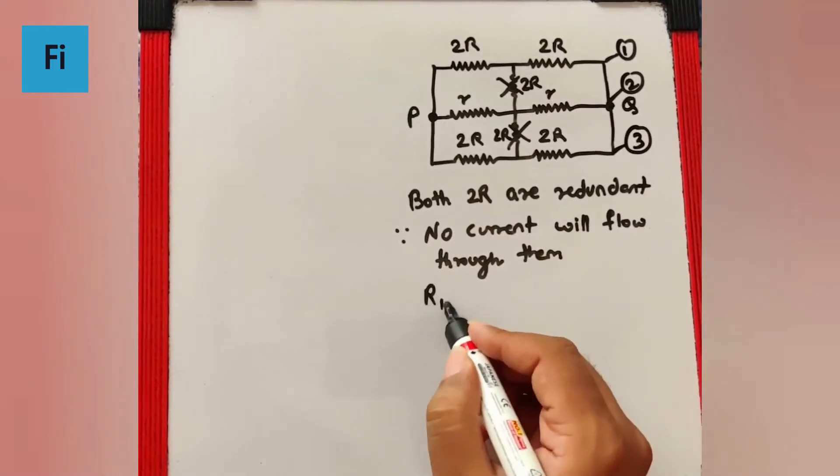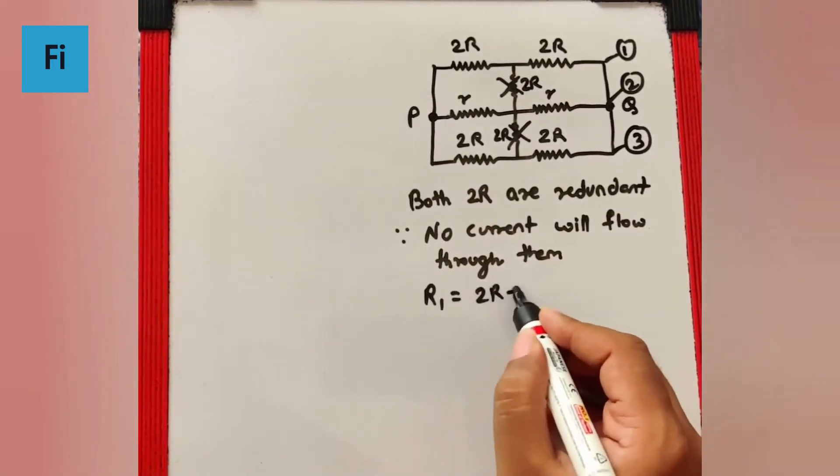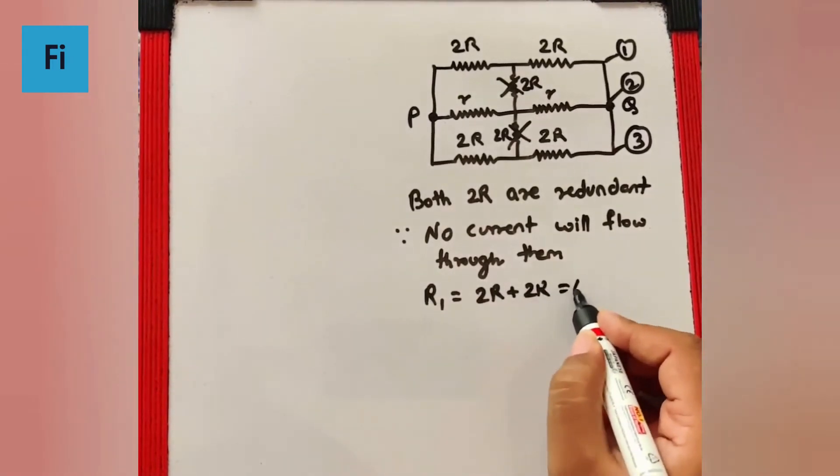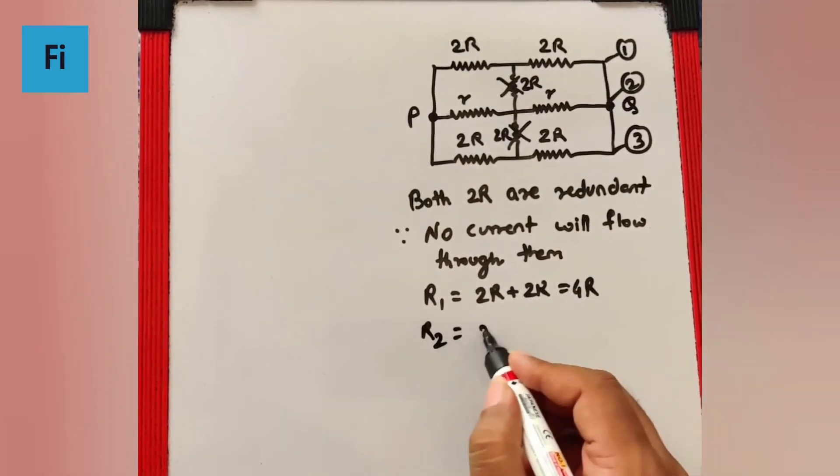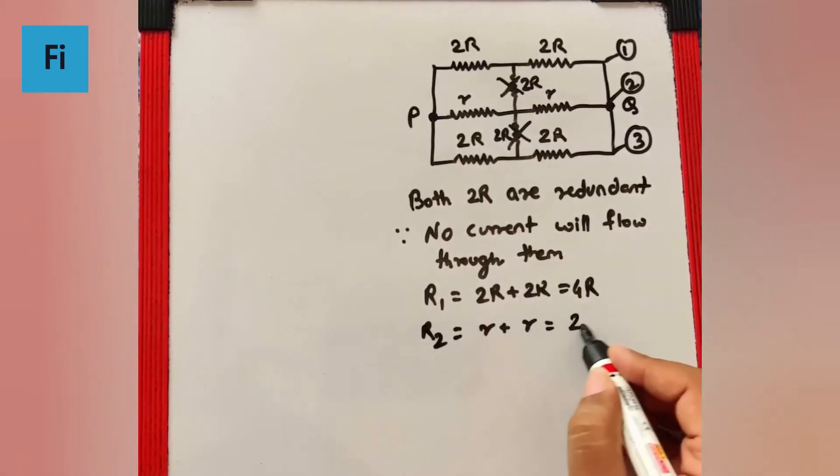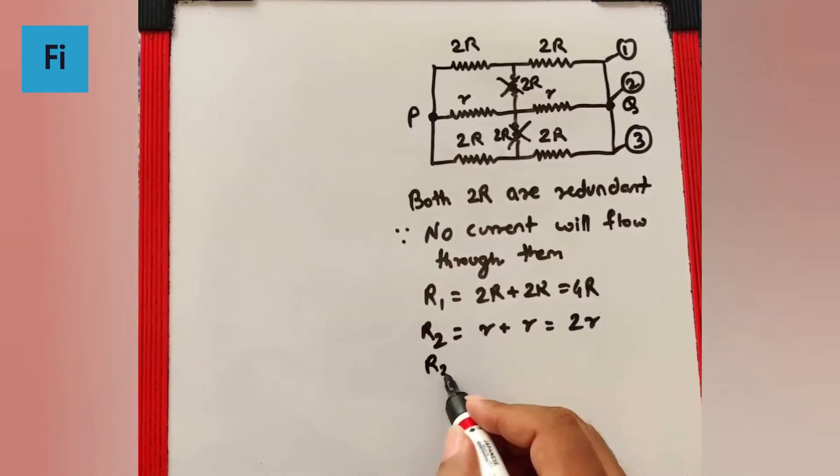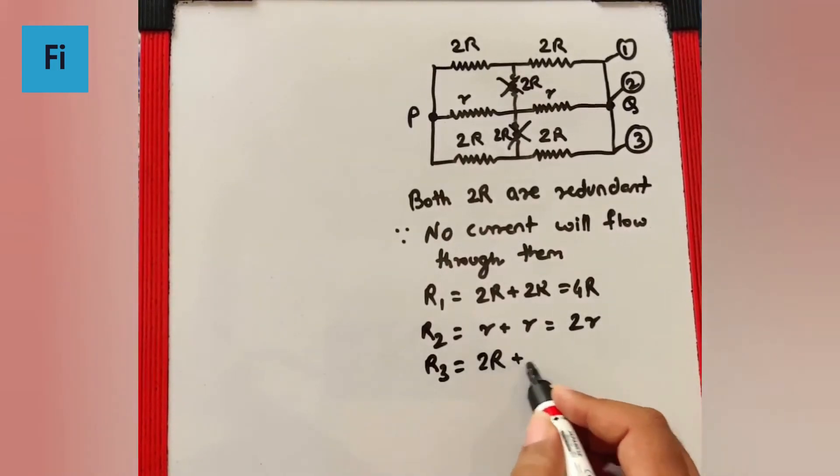I can say R1 is going to be 2R plus 2R, 4R. R2 is going to be R plus R, that is 2R, and R3 is going to be again 2R plus 2R, 4R.